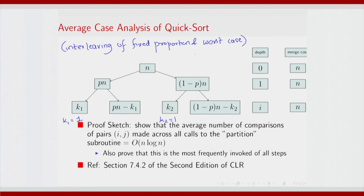This is a very loose way of stating what the average case is. One can get a bit more rigorous and consider the partition algorithm. Remember that in the partition algorithm we performed a swap, and our swap was based on a subset of comparisons that were made. The actual cost incurred is through the number of comparisons of pairs (i, j) made across all calls to the partition subroutine, which is O(n log n).